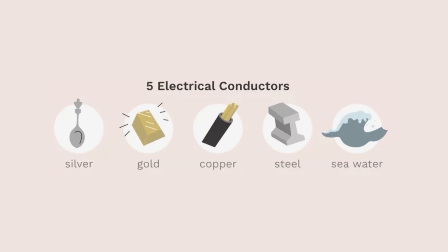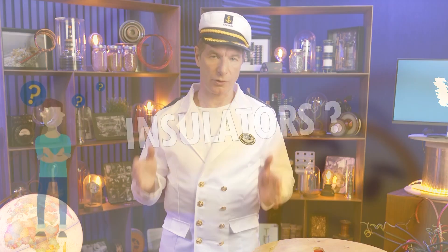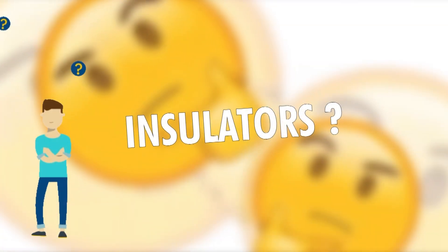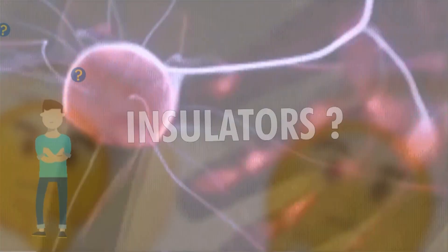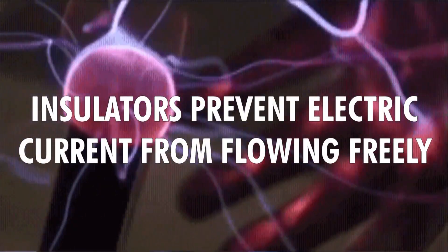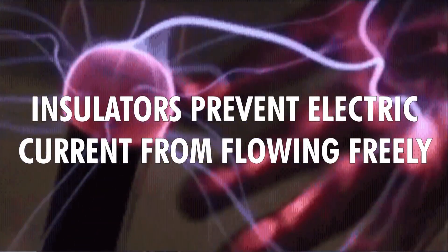So we know that conductors permit the flow of electricity. But what are insulators and how do they work? Like mentioned before, insulators prevent electric current from flowing freely. Their main property is resistivity and low conductivity — and it can be measured.